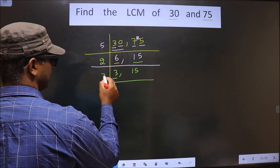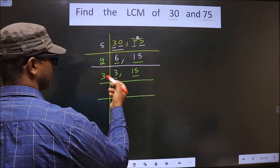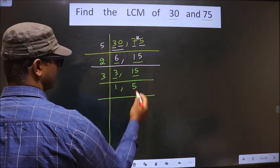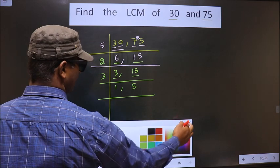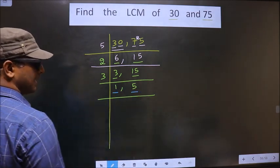3 is a prime number, so 3 times 1 is 3. Here you have 15. When do you get 15 in 3 table? 3 times 5 is 15. Now here we got 1, so you focus on the next number, that is 5.